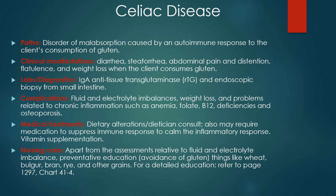Unfortunately celiac disease can cause a lot of complications such as fluid and electrolyte imbalances, weight loss, anemia, B12 deficiency, and osteoporosis that also need to be treated. We can introduce medications that help with inflammation and suppress that immune response, but really our role here is going to be providing good education on how to avoid gluten. There's a great chart in your book — Table 41-4 — on how to better educate your client with celiac disease.